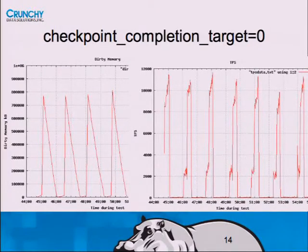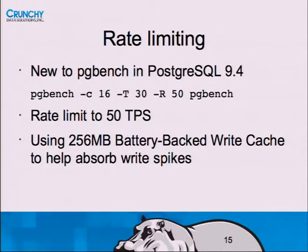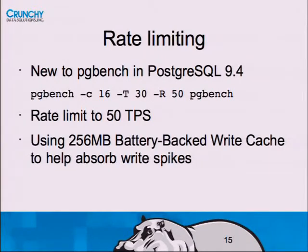The first lesson: optimizing for throughput will do bad things to your latency, and you need to be aware of which you're actually doing. What's new in Postgres 9.4 is a feature that lets you limit how much work PG bench does during any period of time - a rate limit or throttle. In this example, running 16 clients for 30 seconds and limiting to 50 transactions per second. It creates a schedule, thumping something out 50 times a second, and clients sleep and wait if it's not time yet.